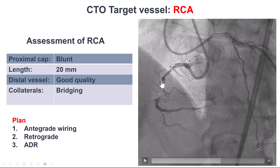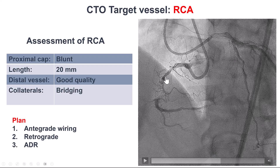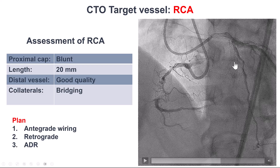Our plan was to first try antegrade wiring, although we knew there was a significant risk of wires getting into the bridging collaterals causing perforation. Therefore, the plan was to not be extremely aggressive with antegrade wiring. If that didn't work, do a brief retrograde attempt, even though we did not see retrograde filling through septal collaterals. And if that did not work, do antegrade dissection and re-entry.